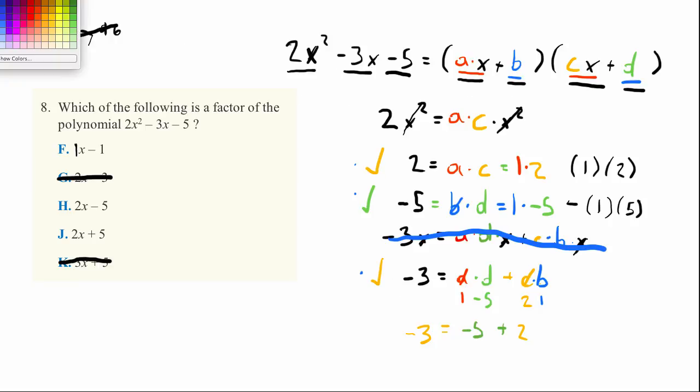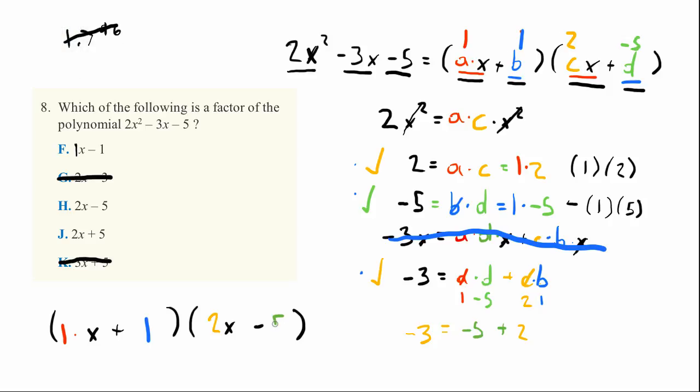So it looks like we got a working solution here to the problem by making a equal to 1, by making b equal to 1 as well, and then by making c equal to 2, and by making d equal to a negative 5. So if we actually write these out in a little more detail, what we have is 1 times x plus 1 times that whole equation times 2x minus 5. And this is a good factorization for it. And that will equal 2x squared minus 3x minus 5. You can multiply it out to confirm.